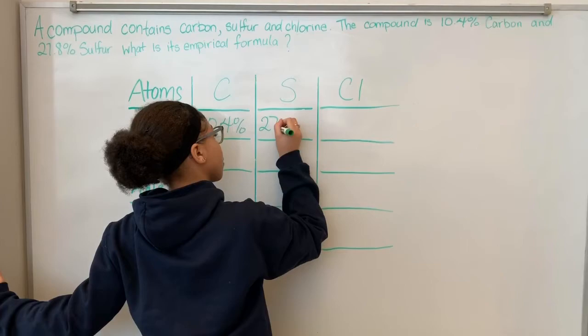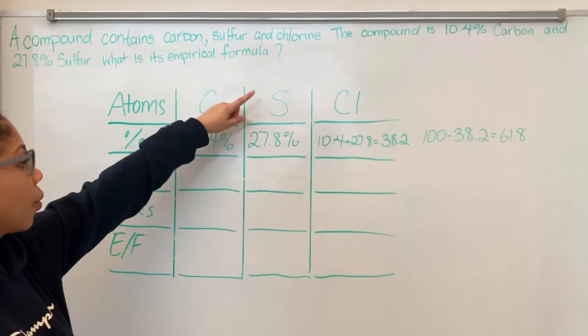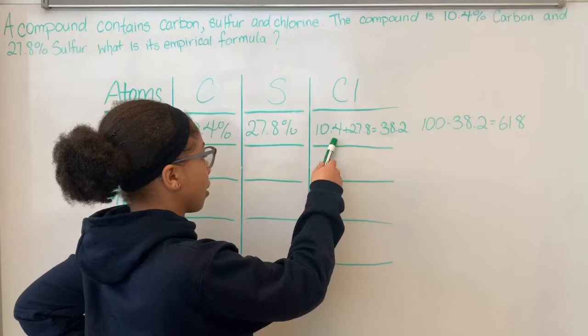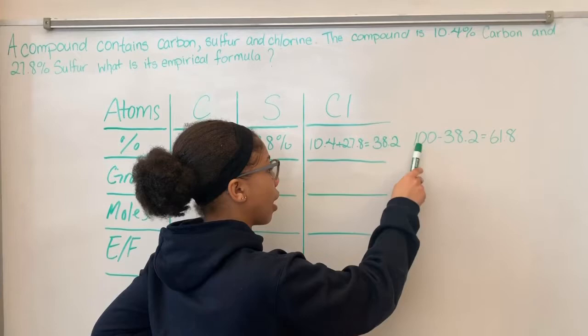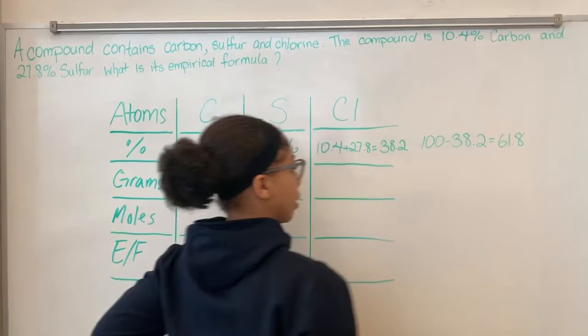We have 10.4% carbon and 27.8% sulfur. To find chlorine, we take 10.4% plus 27.8%, which gives us 38.2%. Then we take 100% minus 38.2%, and that gives us 61.8%. So that's our percent for chlorine.